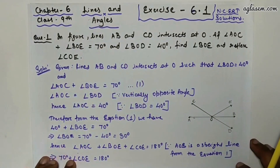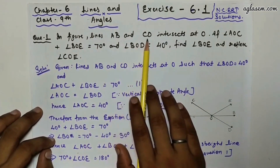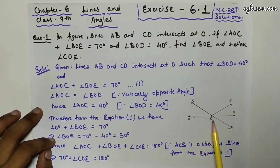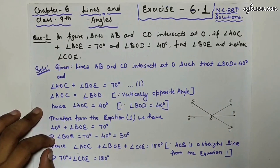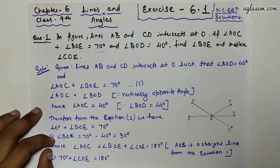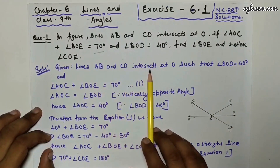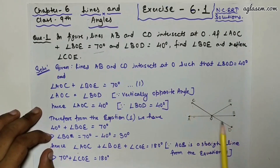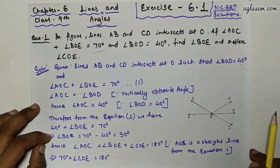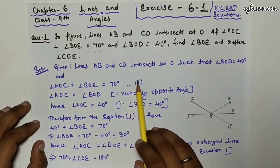Let's start with Question 1. In the figure, lines AB and CD intersect at point O. If angle AOC plus angle BOE equals 70 degrees and angle BOD equals 40 degrees, find angle BOE and reflex angle COE. Given: lines AB and CD intersect at O such that angle BOD = 40° and angle AOC + angle BOE = 70°.